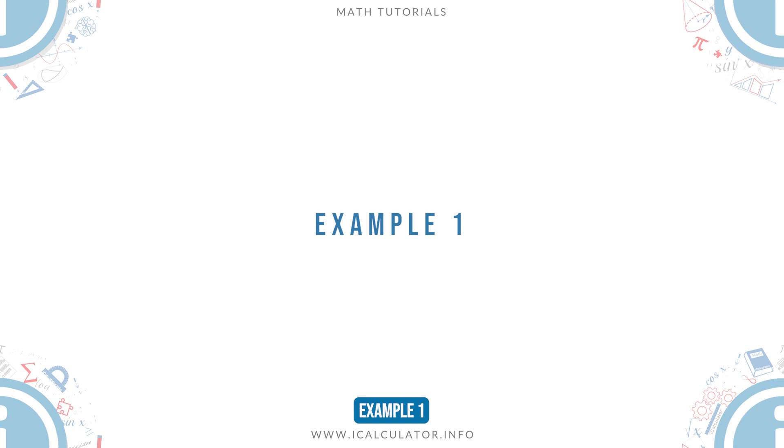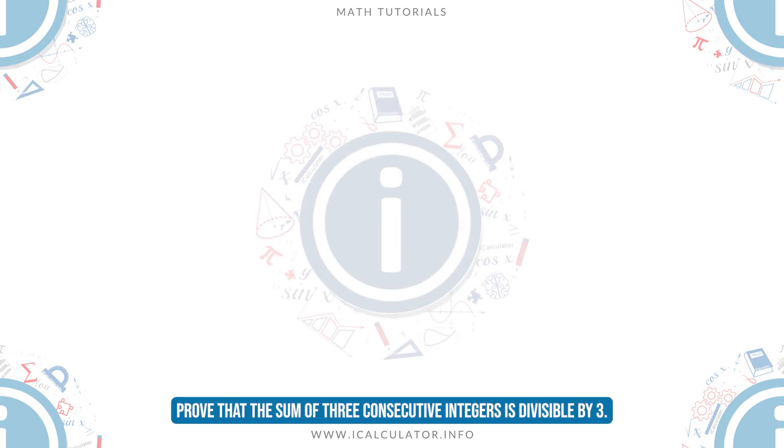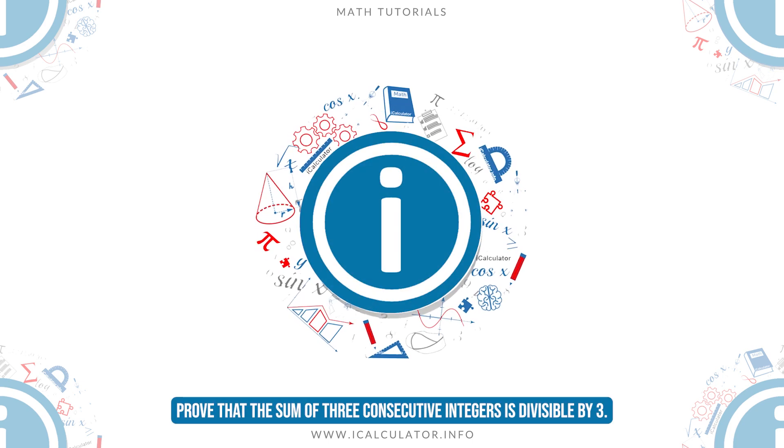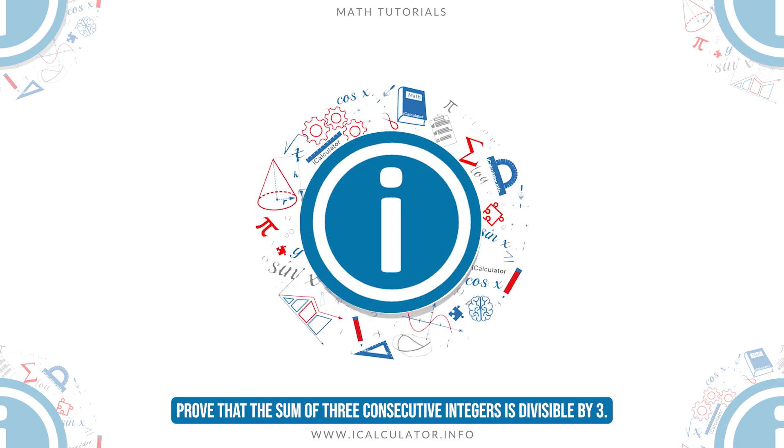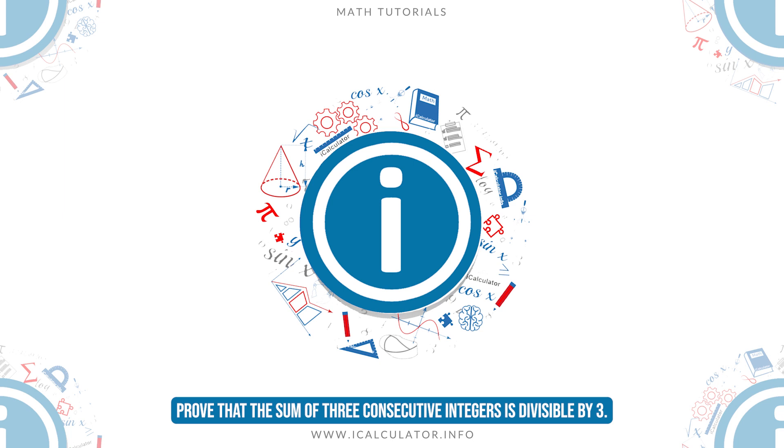Example 1: Prove that the sum of three consecutive integers is divisible by 3.